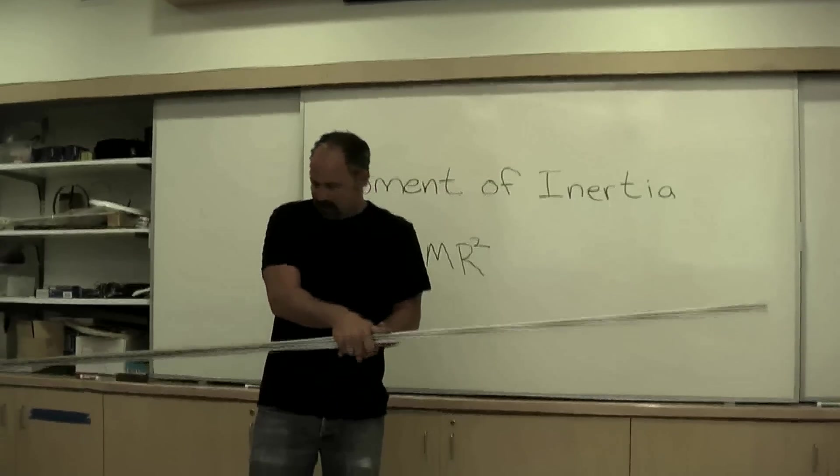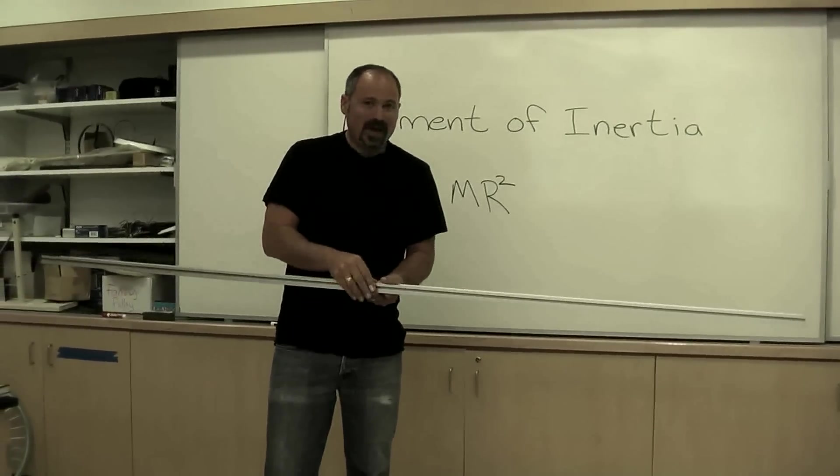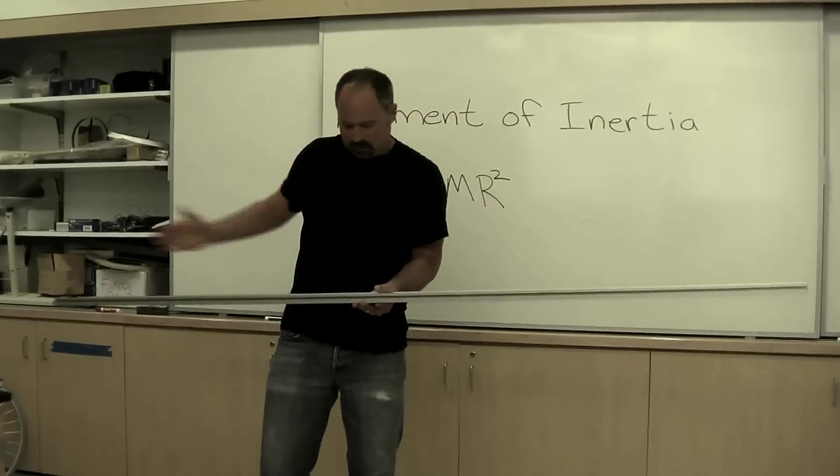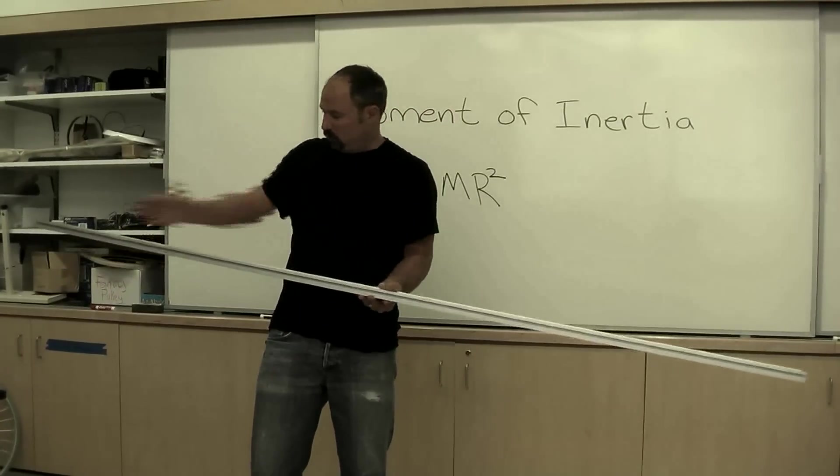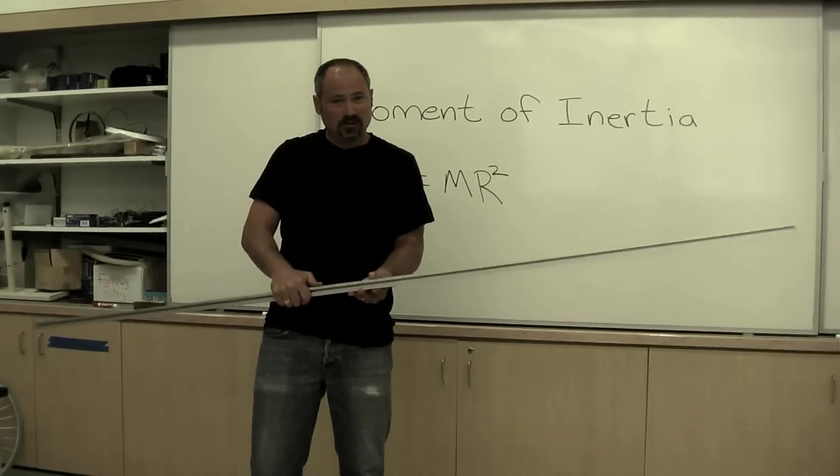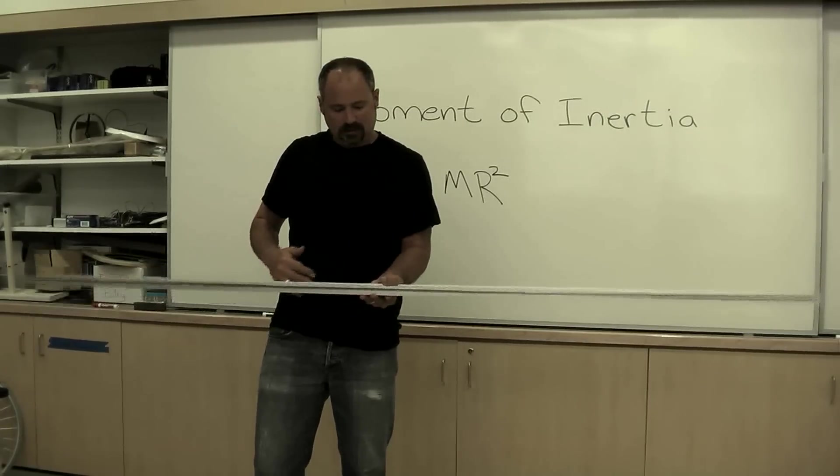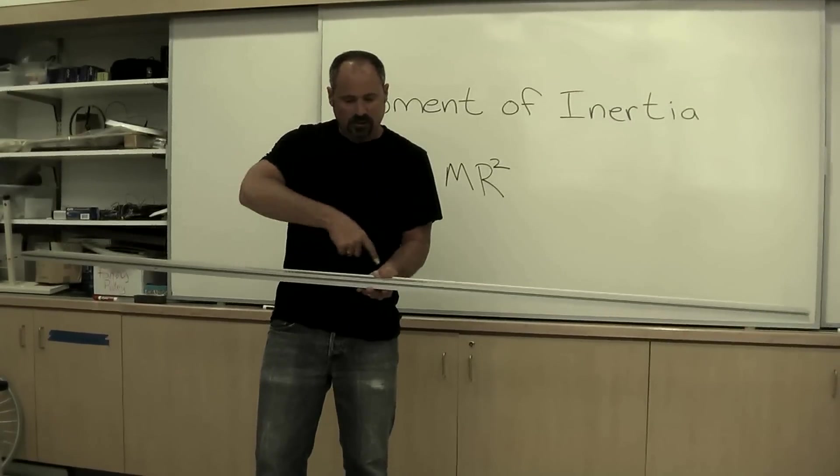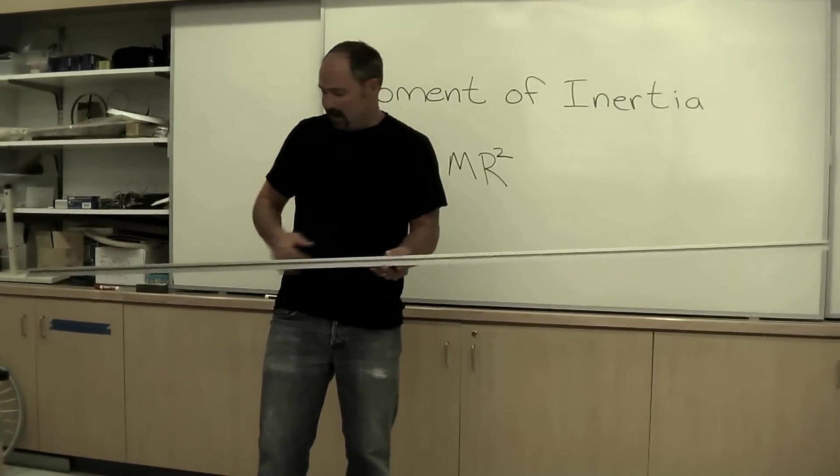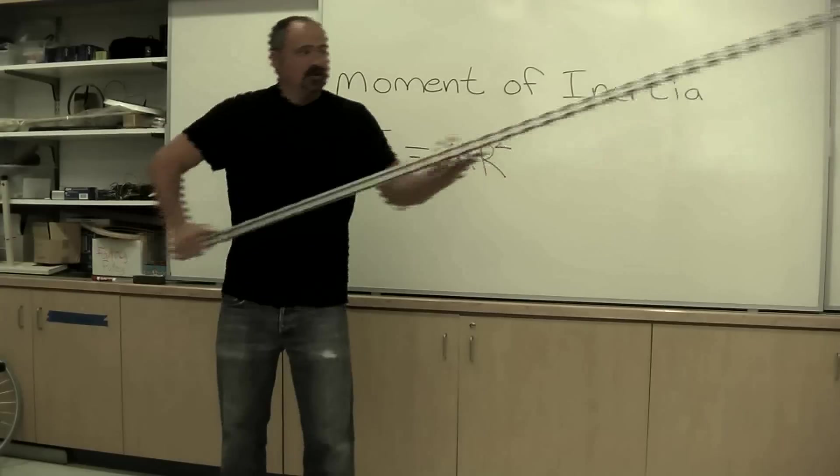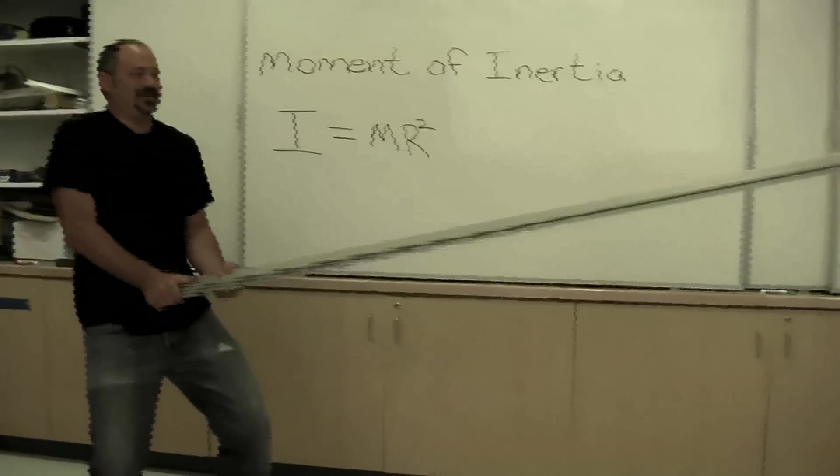For example, if I hold this guy in the middle, the mass is about half a meter from, well a little more than half a meter, a full meter from each side, and it's not too difficult to rotate. This would be my pivot, this is the rotation axis. But if I hold it on the end, it's very difficult to rotate.